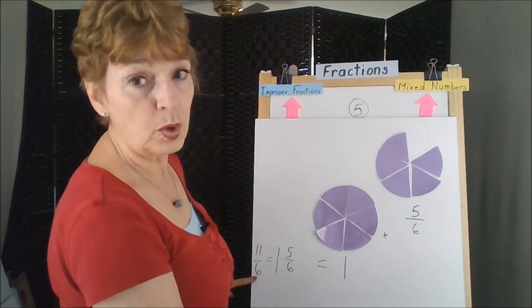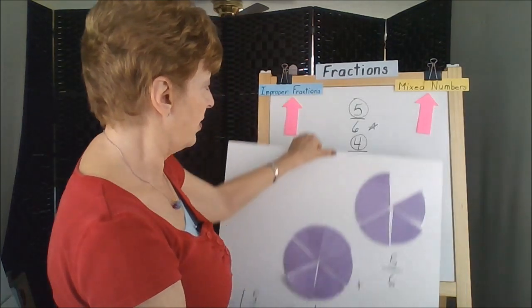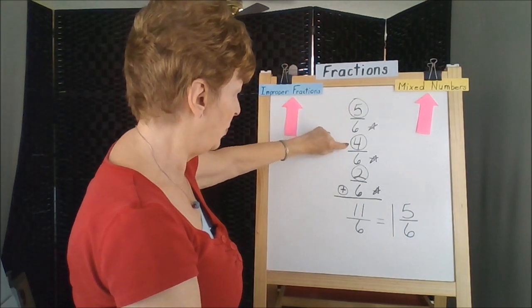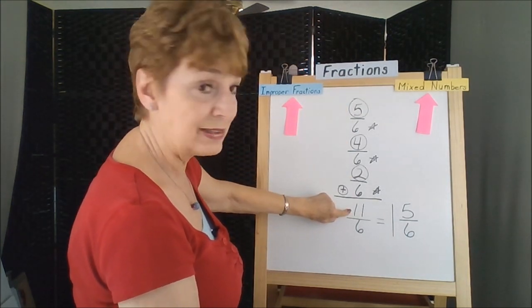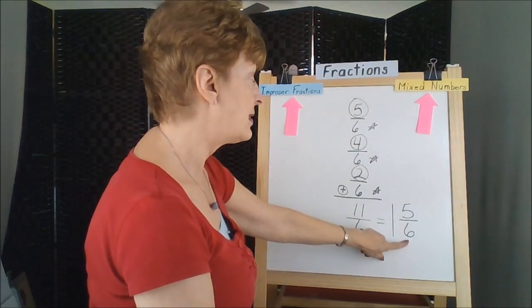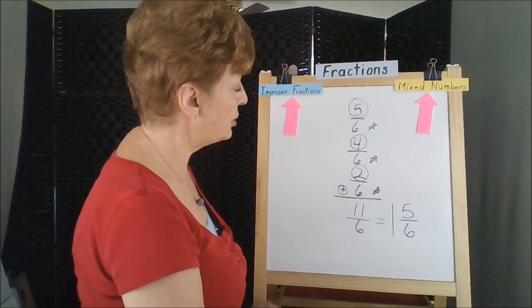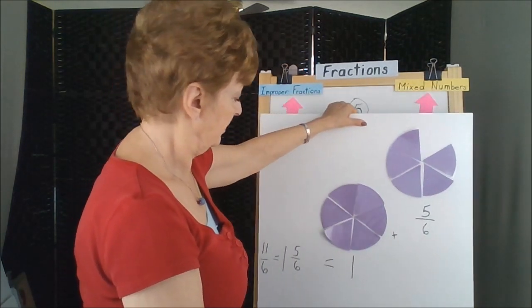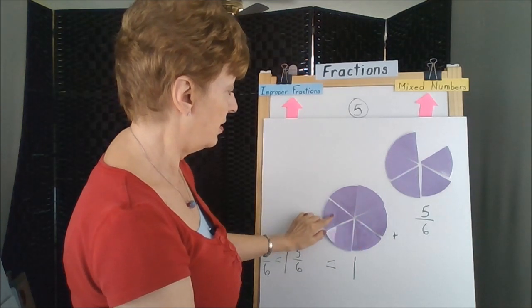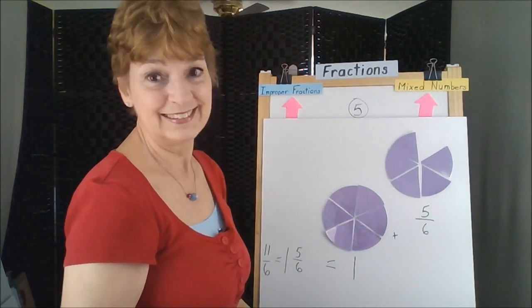And this is how we needed to work our problem because we had three numbers to add. The five, four, and the two gave us our eleven sixths. But after it was all said and done, this mixed number was a lot easier to picture. We have one whole circle and five sixths of another.